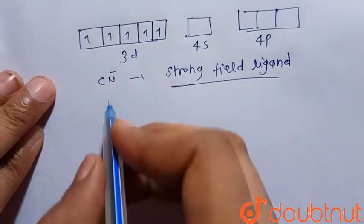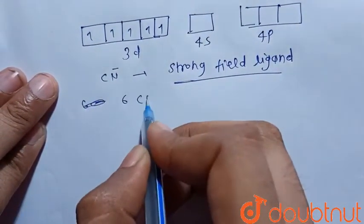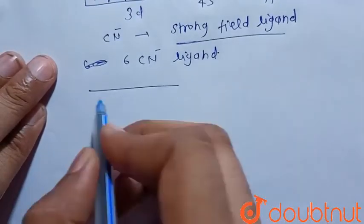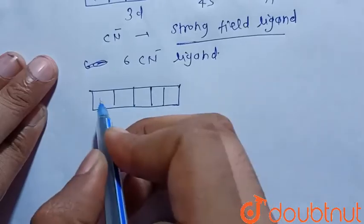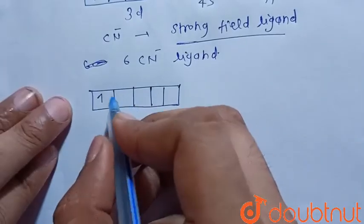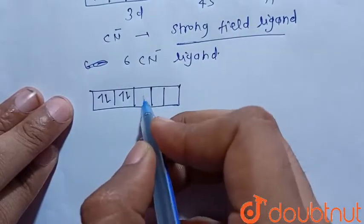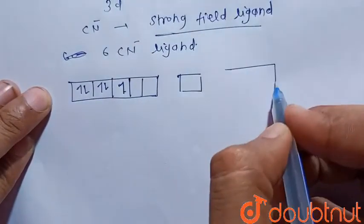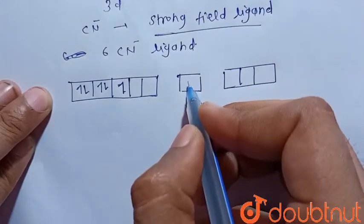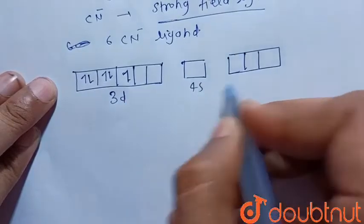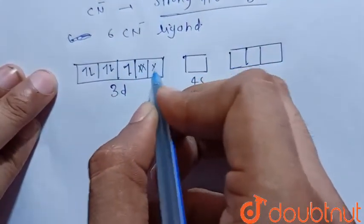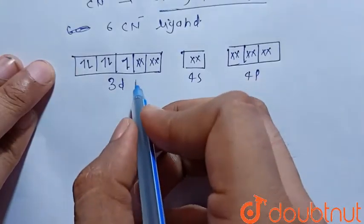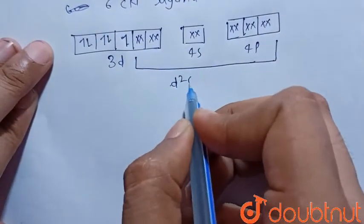There are 6 CN⁻ ligands, and each CN⁻ will donate 2 electrons. Since CN⁻ is a strong field ligand, the 5 d-electrons get paired up. This results in the formation of an inner orbital complex. The orbitals involved are 3d, 4s, and 4p, giving a d²sp³ hybridization.